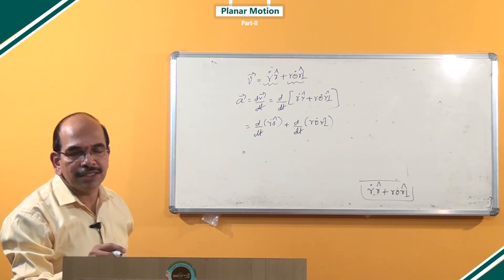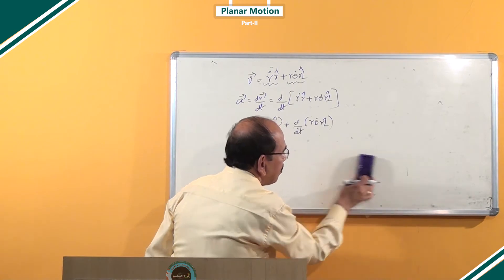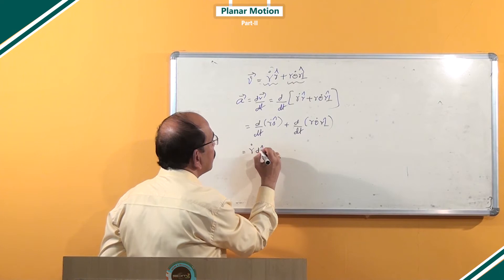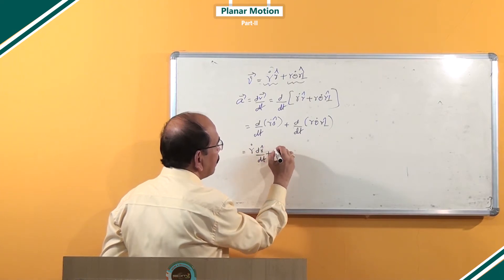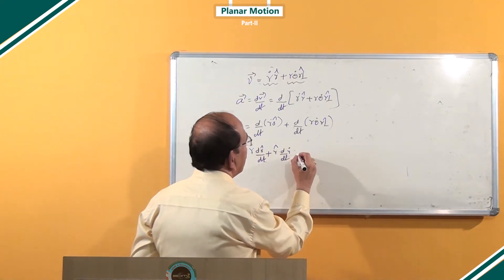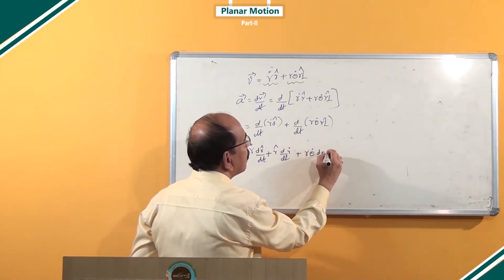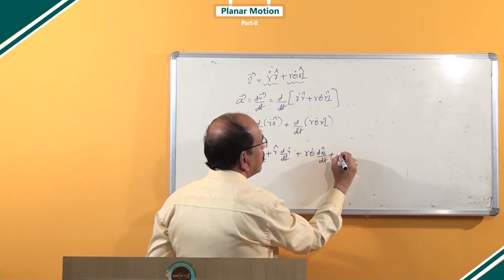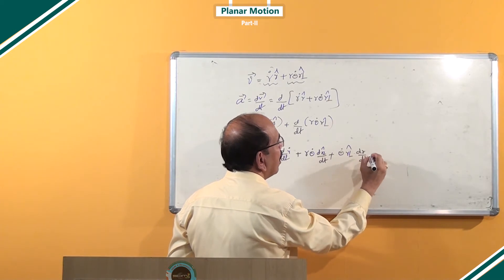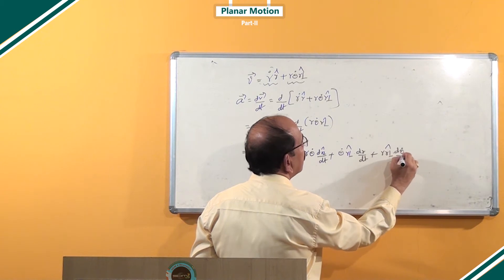Now simplify this expression using the UV formula and UVW formula. The derivative of a product is: the first factor times the differentiation of the second factor, plus the second factor times the differentiation of the first factor. Applying this, we expand each term — including the derivative of r-perpendicular-cap with respect to t, and the derivative of θ-dot with respect to t.